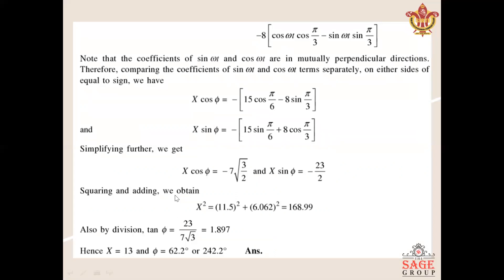Squaring and adding both sides, we will get the value of X. That is X² = (11.5)² + (6.06√2)² = 168.99, which is almost equal to 169. The square root of 169 is 13, so we get X = 13. And here the angle φ is found using tan φ = 23/7.3, which equals 1.897.